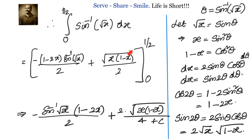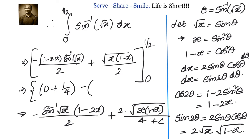When we substitute x = 0, everything is 0. So from the upper limit we get 1/4 and from the lower limit we get 0. Therefore our final answer is 1/4.